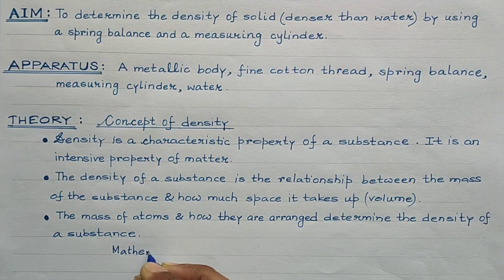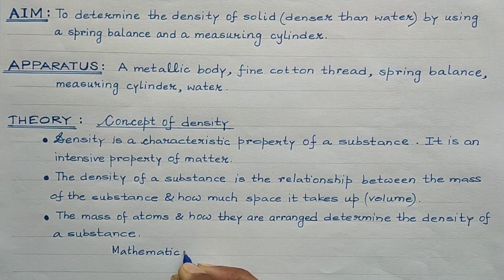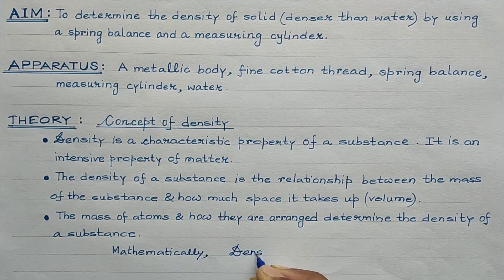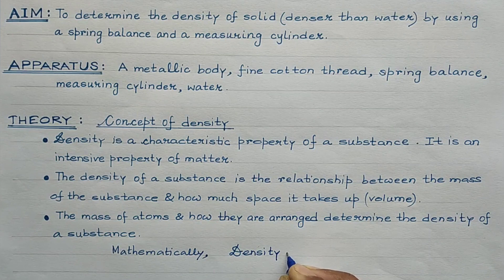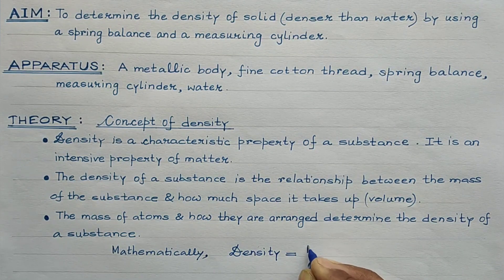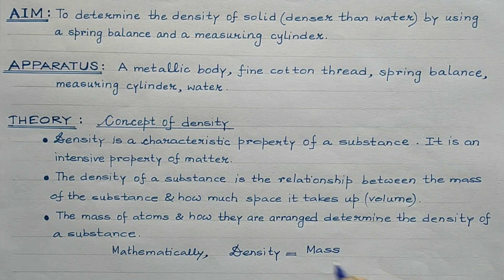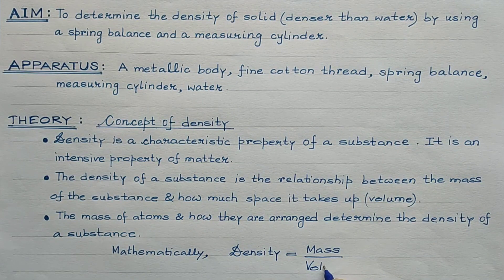Density is an intensive property of matter. It is actually the relationship between the mass of the substance and how much space — that is, volume — it takes up. Mathematically, density of a body is given by mass of the body divided by its volume. Mass per unit volume of a body is known as its density.